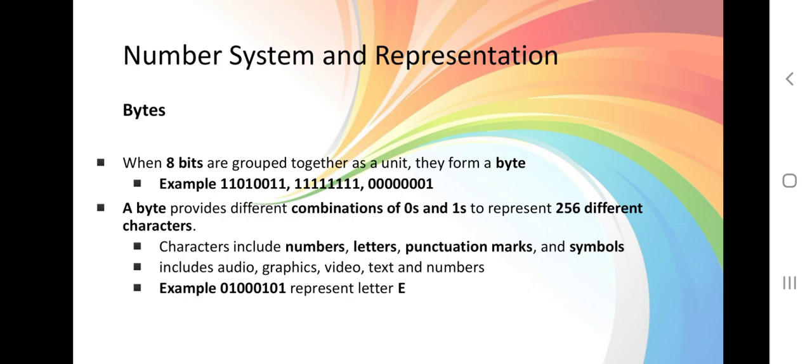A byte provides different combinations of zeros and ones to represent 256 different characters. 2 power of 8 equals 256. Why 2? Because binary 0 and 1. Why 8? Because you got 8 bits that should be on or off.